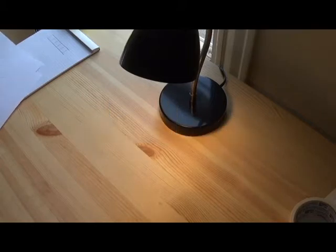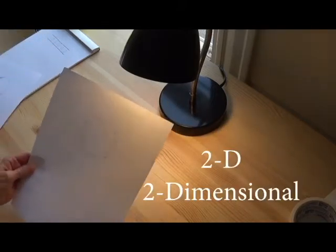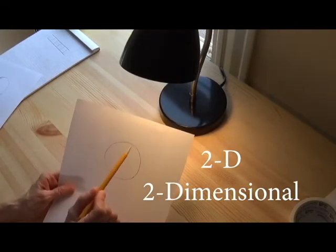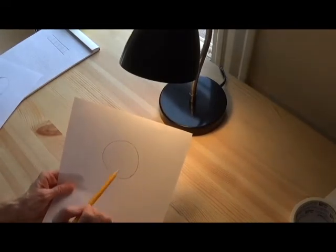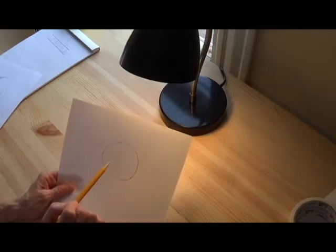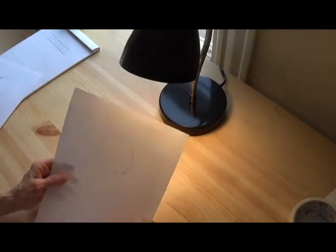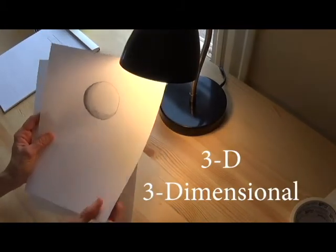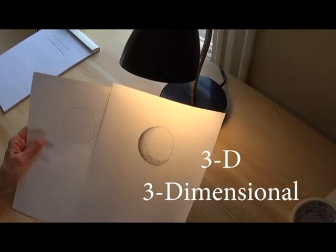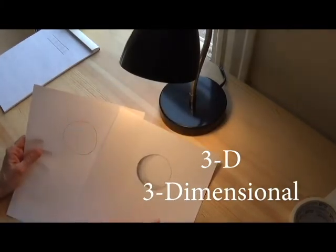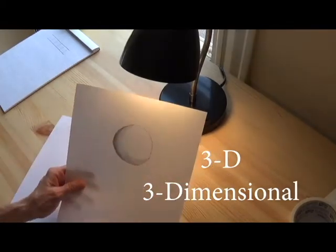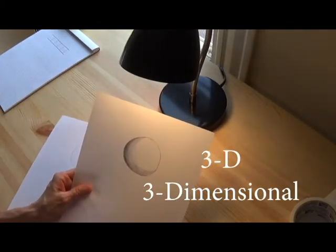We're going to talk about shading, which can make your drawings look more real. You may have heard of 2D or two-dimensional drawings. This is a drawing of a simple circle. This is a 2D or two-dimensional drawing, but look what happens when I add a little bit of shading. It makes it look a little bit more real. By adding shading, this makes your drawing look a little bit more real, a little bit more interesting.